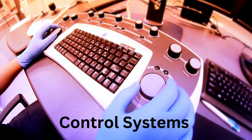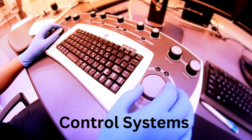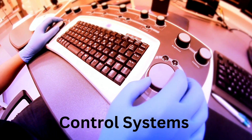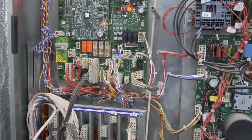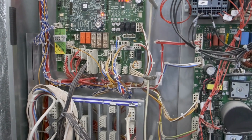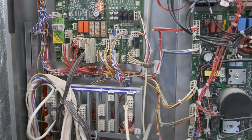Control systems are used to regulate and control machines and systems. This includes feedback, control, and automation.